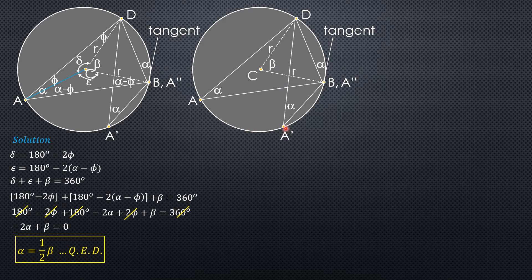Let us consider point A prime and triangle A'CD. We draw a line from A prime to C, which is the radius again. Therefore we have isosceles triangles. We also have an isosceles triangle A'BC, because those sides are both radii of the circle.